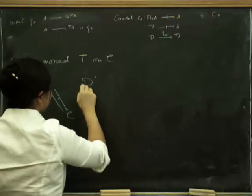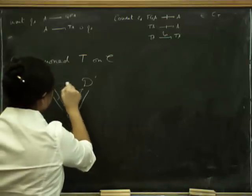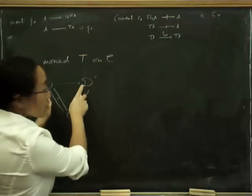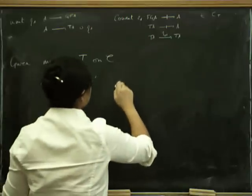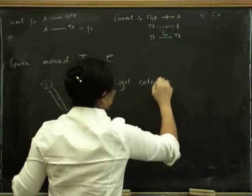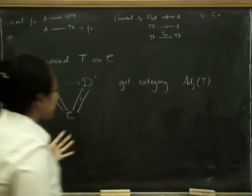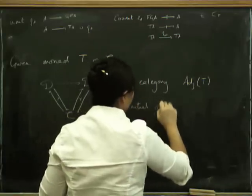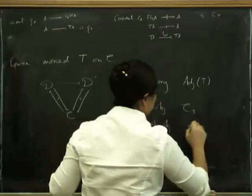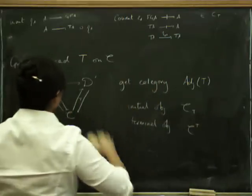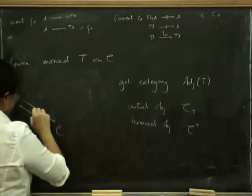Here's one possible adjunction giving rise to T, and here's another. A morphism in this category of adjunctions is a functor between the middle categories making both the left adjoint and right adjoint triangles commute. We call this category Ad_T — the category of adjunctions giving rise to T.